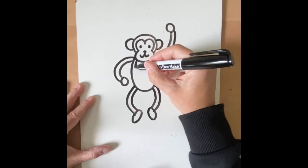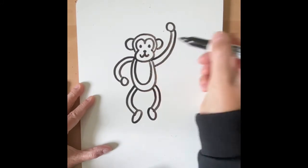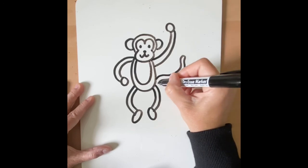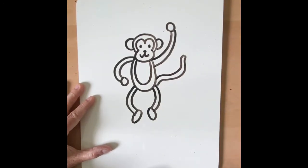Let's make a belly. I'm going to make another U in here. And let's put a tail. And there you have your monkey.